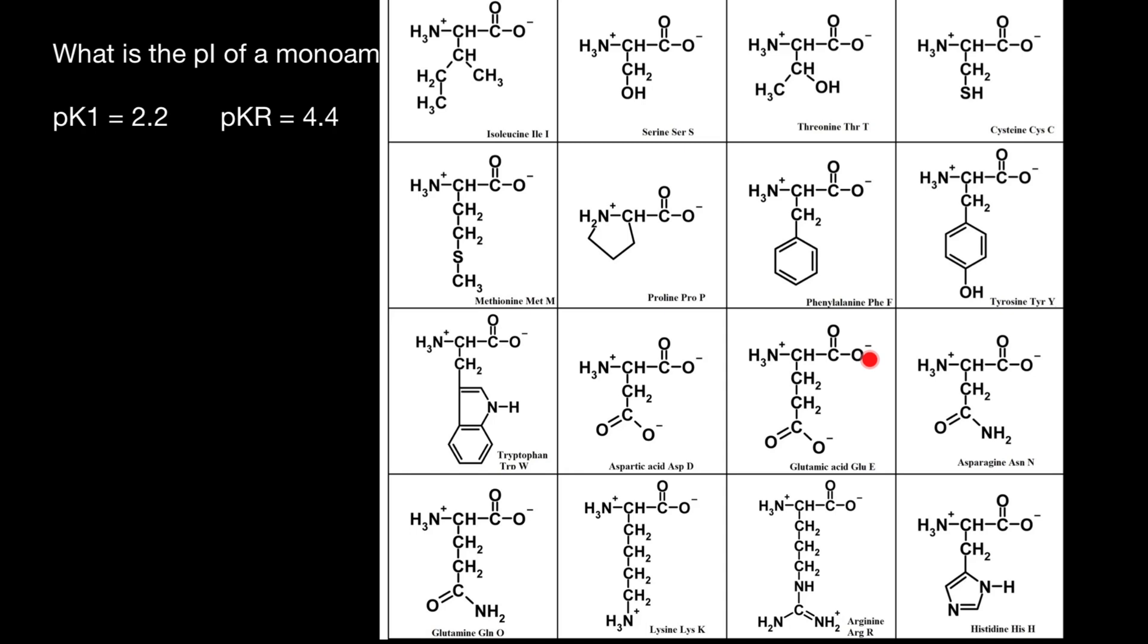One amino group here, one carboxylic acid group here, and one carboxylic acid group in the R chain. So when we change pH of the solution, not only can the amino group get or lose a proton, not only can this carboxylic acid group get or lose a proton, but also this carboxylic acid group in the R chain. Only these two amino acids have acid in their name: aspartic acid and glutamic acid.